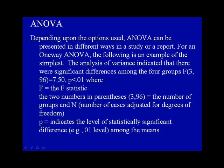Depending upon the options used, ANOVA can be presented in different ways in a study or a report. For a one-way ANOVA, the simplest example is: 'The analysis of variance indicated that there were significant differences among the four groups, F(3, 96) = 7.50, p < 0.01,' where F equals the F statistic, the two numbers in parentheses — 3 and 96 — equal the number of groups and N adjusted for degrees of freedom, and P indicates the level of statistically significant difference among the means.